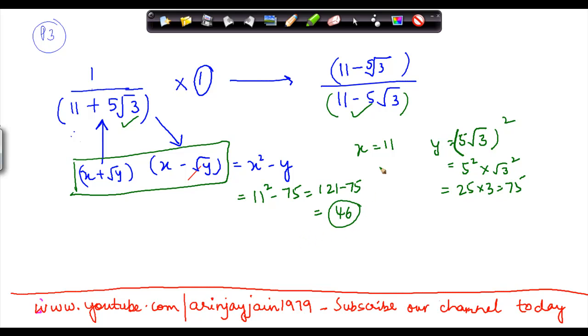If I equate this value in this equation, then the equation becomes 11 minus 5 under root 3 upon 46. So what I did was by applying this formula, by applying this identity.